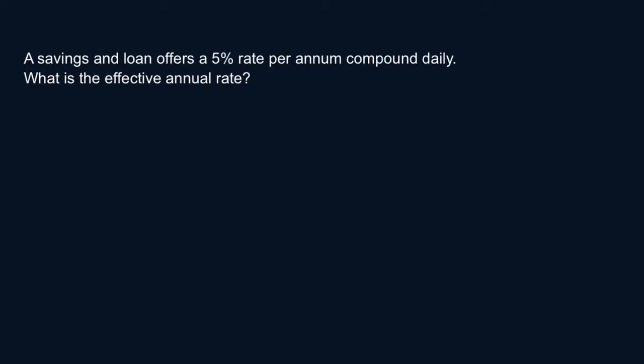So let's write that down. What do we know? R is 5% per year compounded daily, so M is 365, and the annual effective rate I is the question.